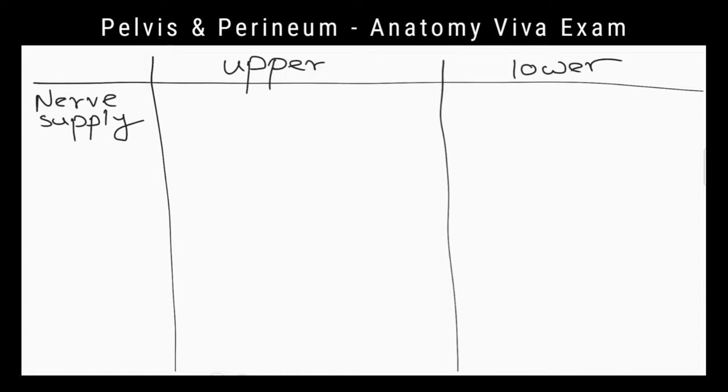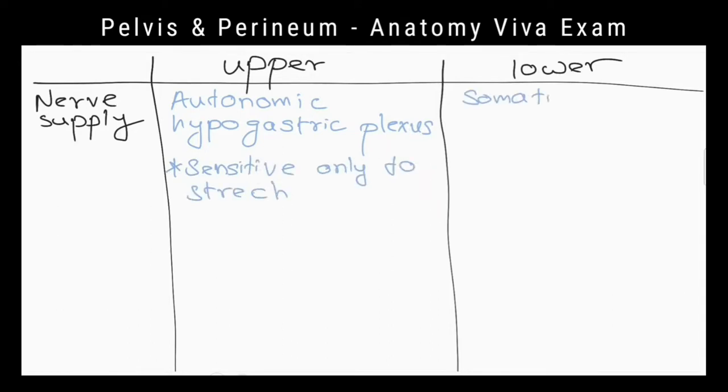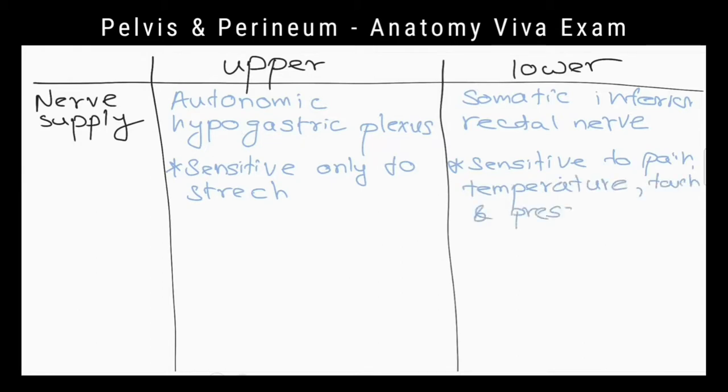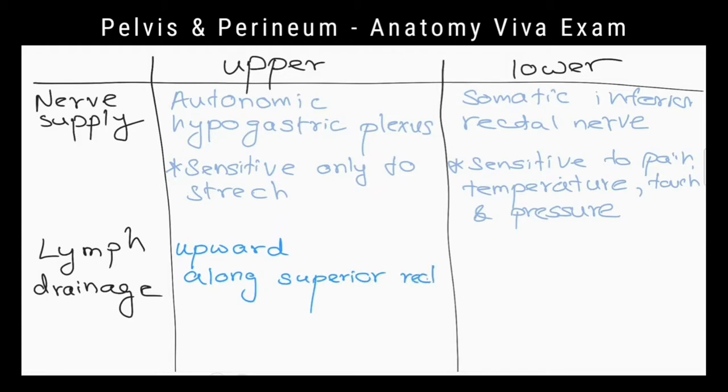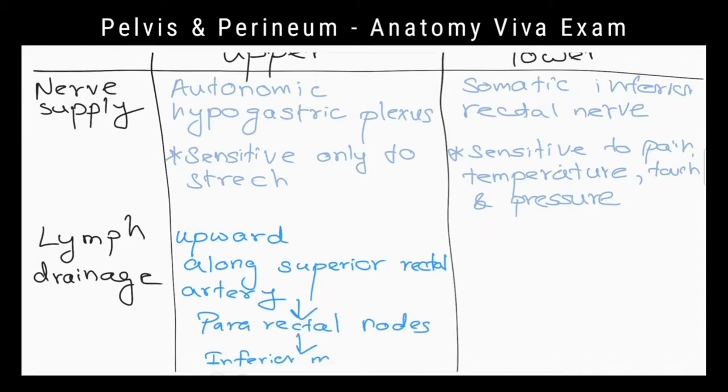What are the other differences between upper and lower halves of anal canal? Nerve supply to upper part of anal canal is derived from autonomic hypogastric plexus, so it is sensitive to stretch. And nerve supply to lower part of anal canal is from somatic inferior rectal nerve, so it is sensitive to pain, temperature, touch, and pressure.